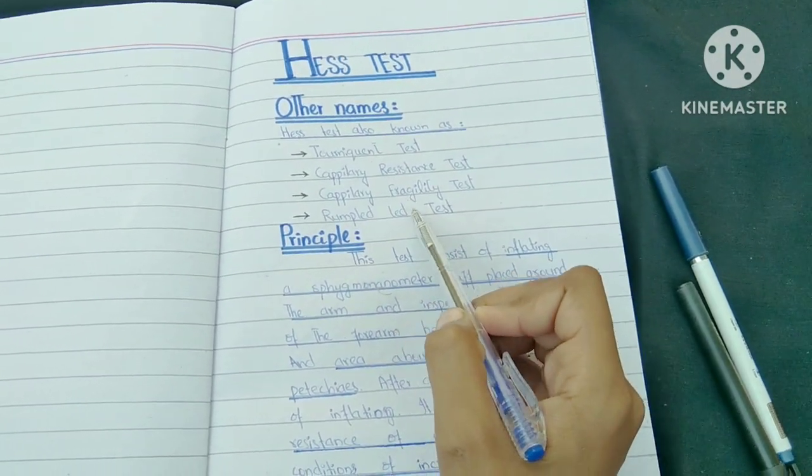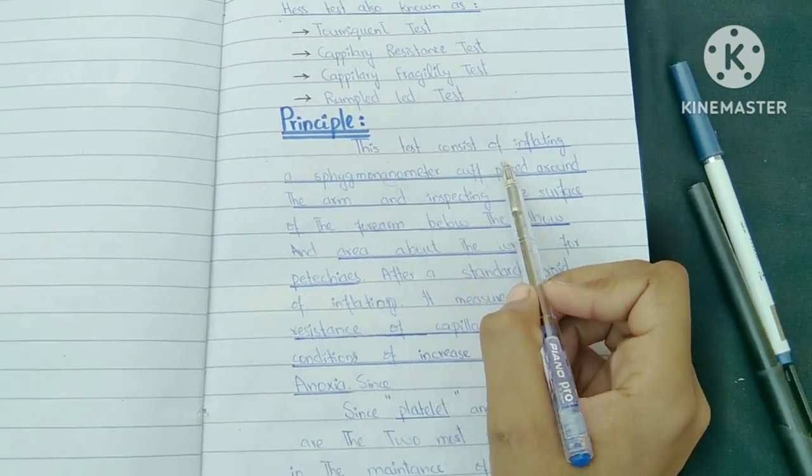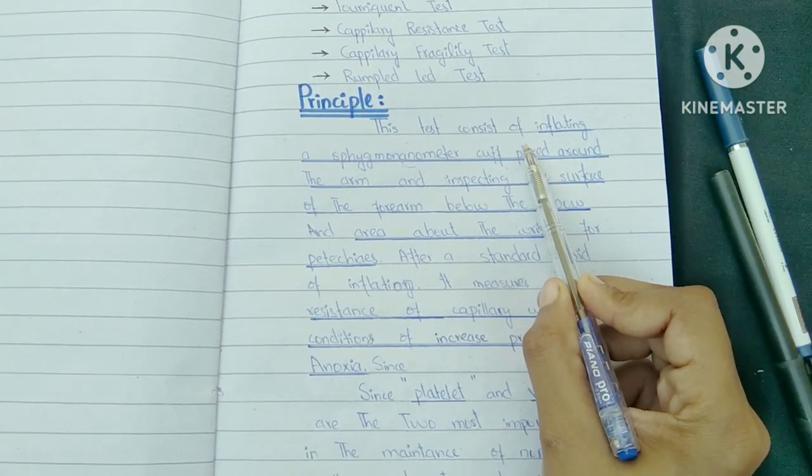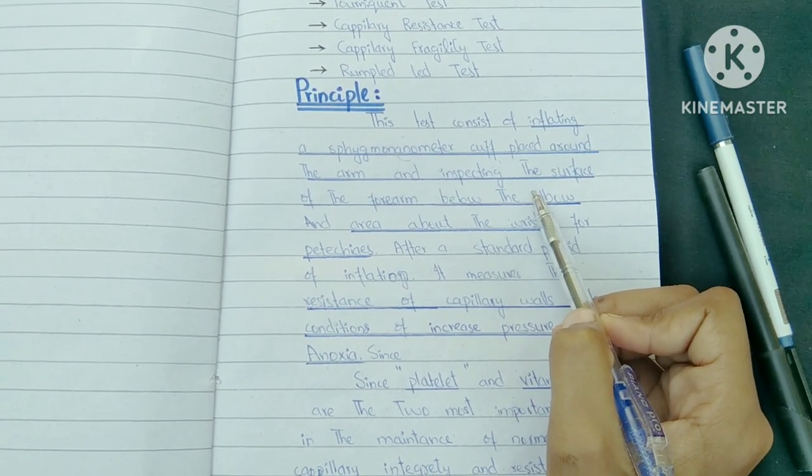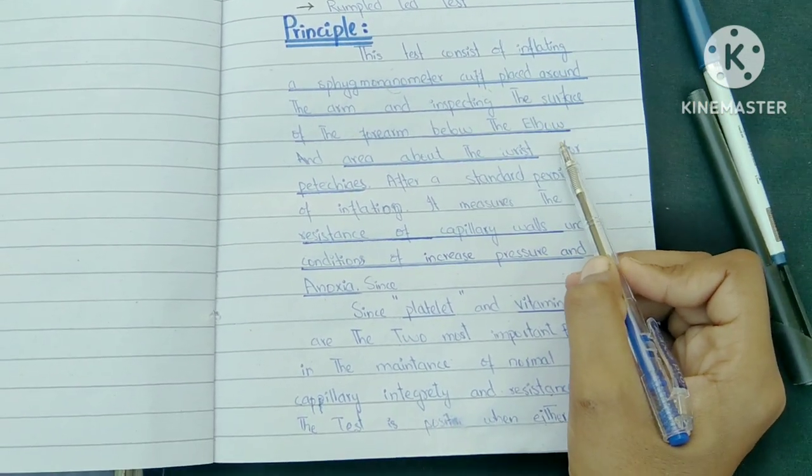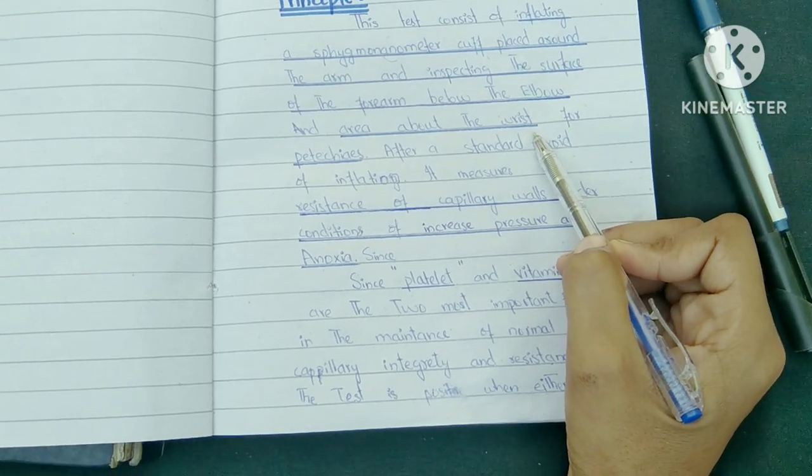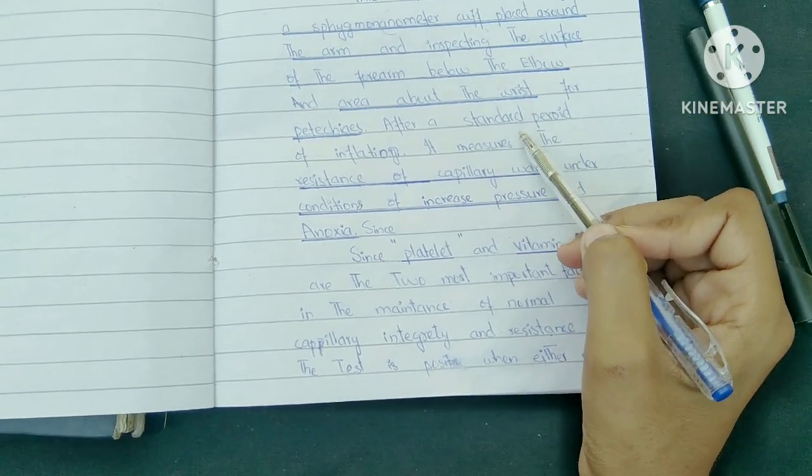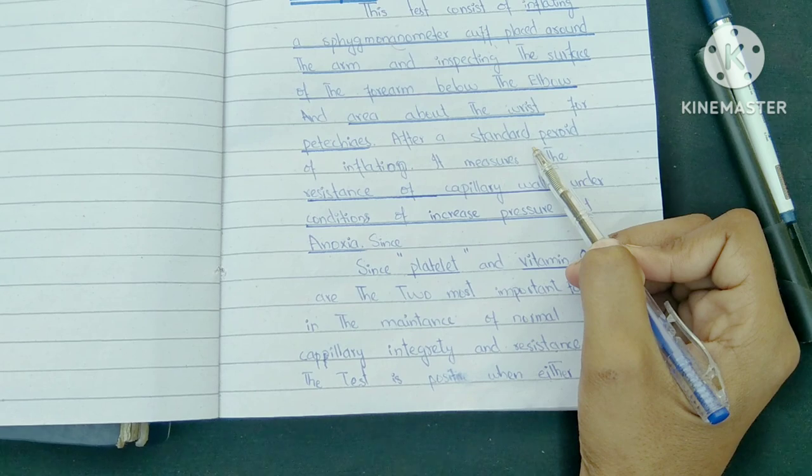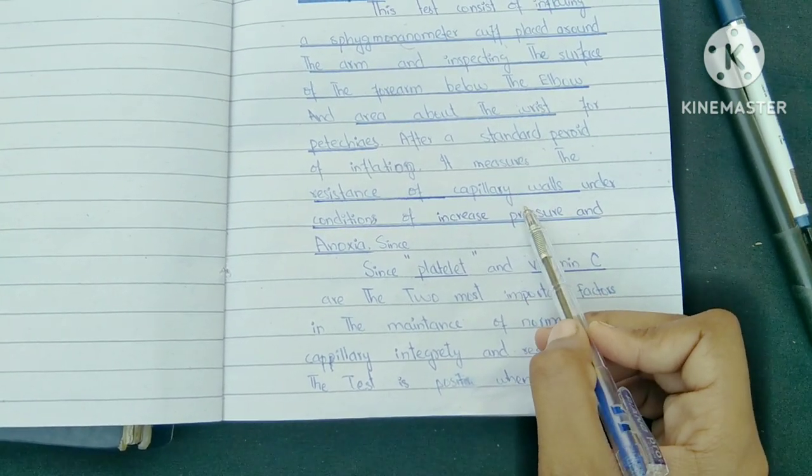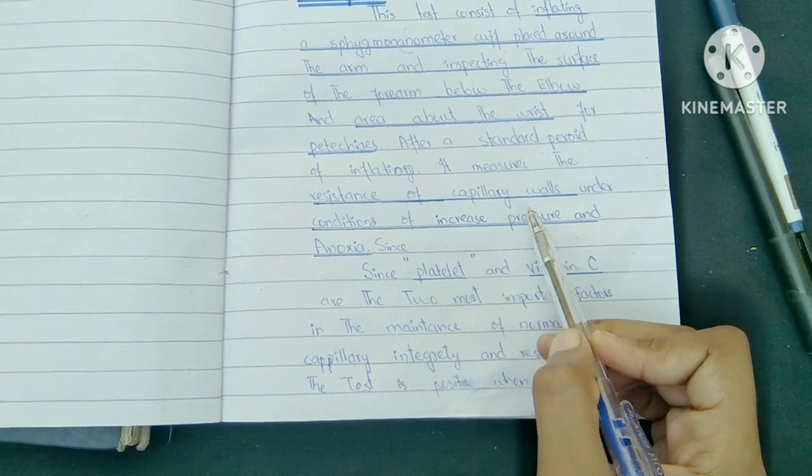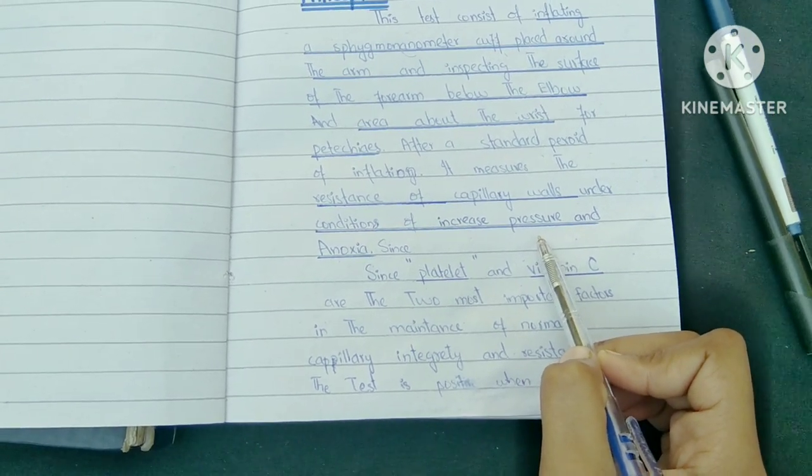If we talk about the principle, this test consists of inflating a sphygmomanometer cuff placed around the arm and inspecting the surface of the forearm below the elbow and the area about the wrist for petechiae. After a standard period of inflation, it measures the resistance of capillary walls under conditions of increasing pressure and anoxia.